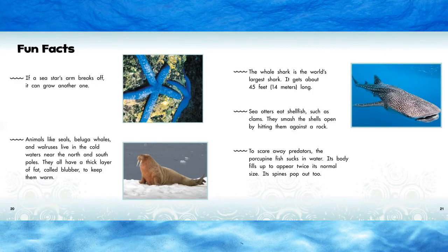Here are some fun facts. If a sea star's arm breaks off, it can grow another one. Animals like seals, beluga whales, and walruses live in the cold waters near the north and south poles. They all have a thick layer of fat called blubber to keep them warm. The whale shark is the world's largest shark — it gets about 45 feet or 14 meters long. Sea otters eat shellfish such as clams. They smash the shells open by hitting them against a rock.